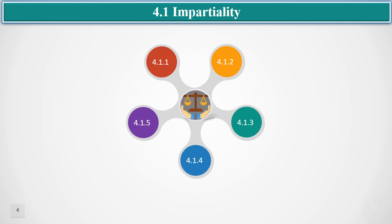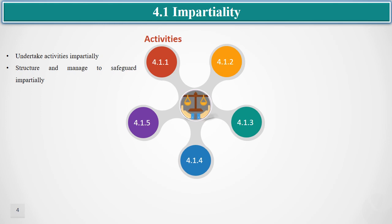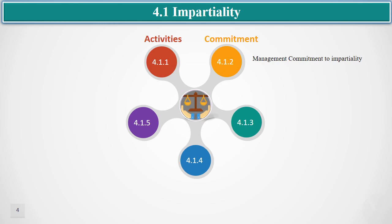Now let us discuss the requirements. Clause 4.1, which is dedicated to impartiality, has five sub-clauses. As per sub-clause 4.1.1, all laboratory activities shall be conducted impartially. The organization structure of the laboratory and laboratory processes to perform operations shall be managed in a way to safeguard impartiality. For example, if the laboratory is part of a bigger organization, the laboratory head shall not report to the production head from where samples are being received.